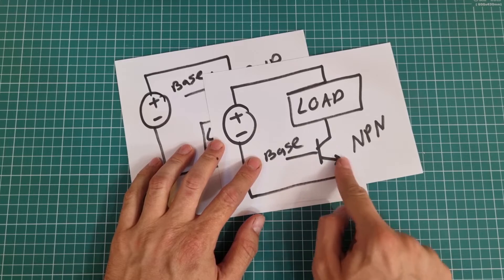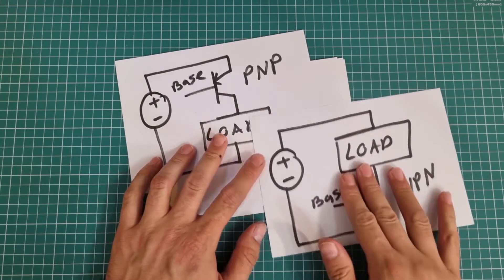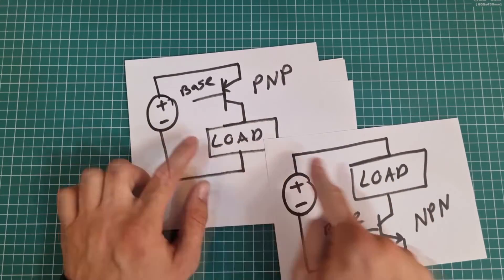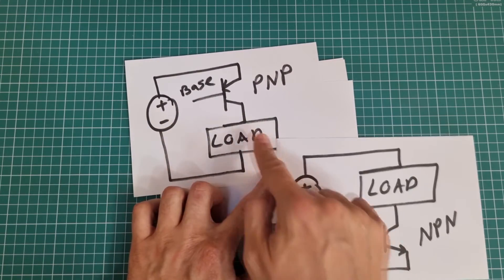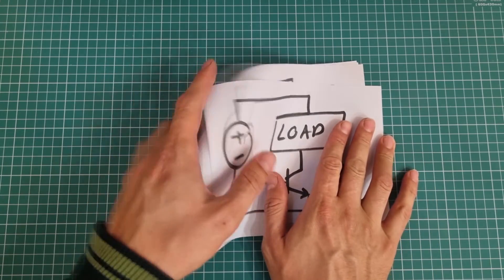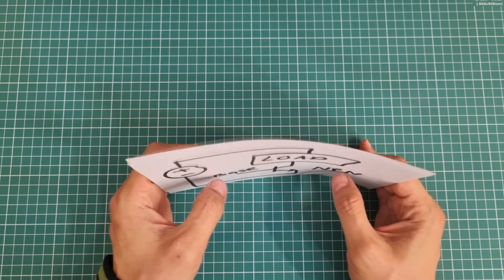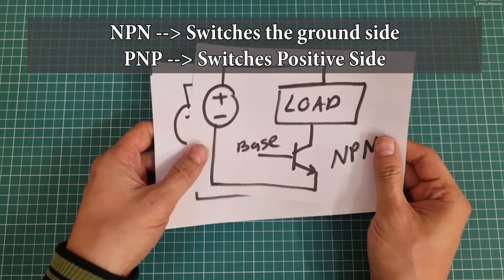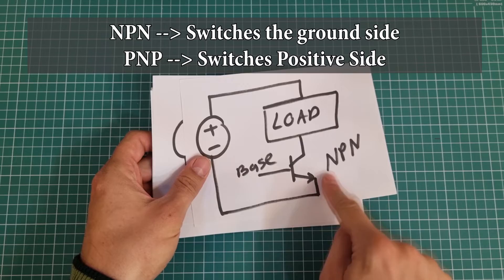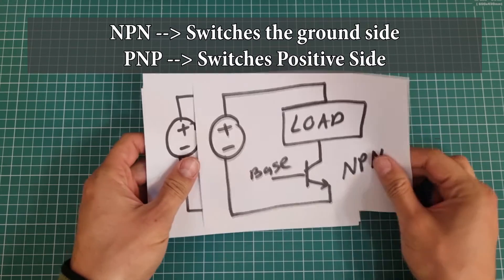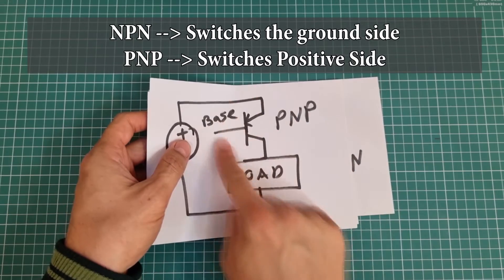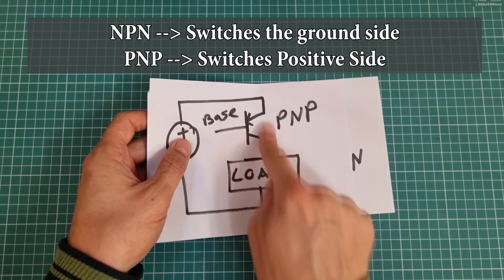In addition, the emitter pin must be connected to power supply and collector pin is always connected to the load in both types. Look here: emitter is connected to power supply and collector is connected to load in both types. Other fact that we know about BJT transistors is that NPN is for switching ground. Look here, NPN transistor is switching the ground of load, and PNP type transistor is for switching power supply's positive side.